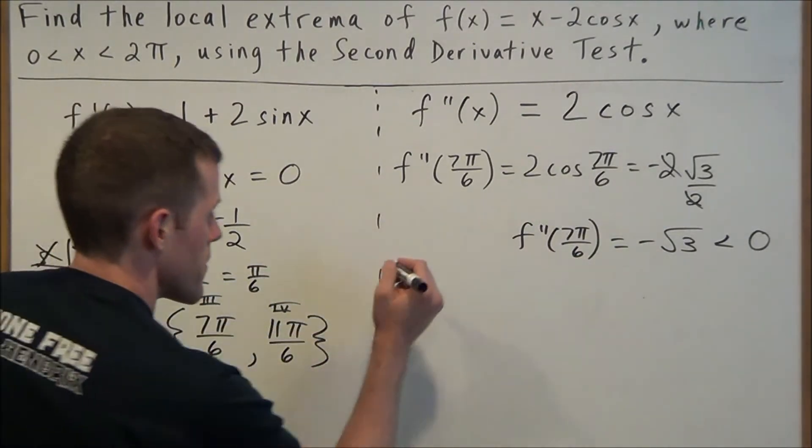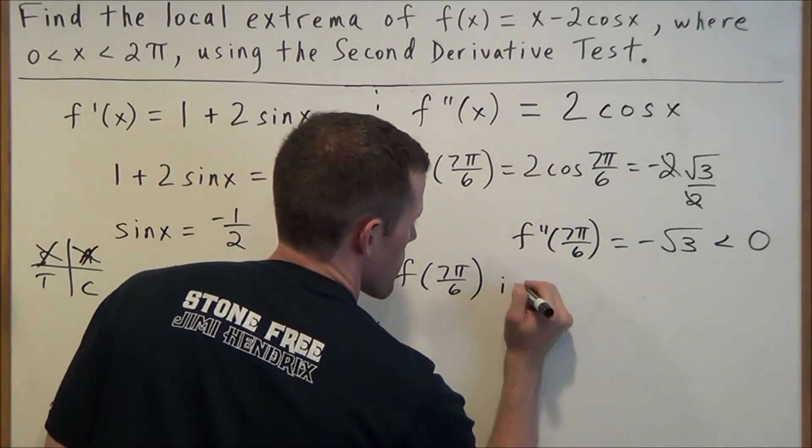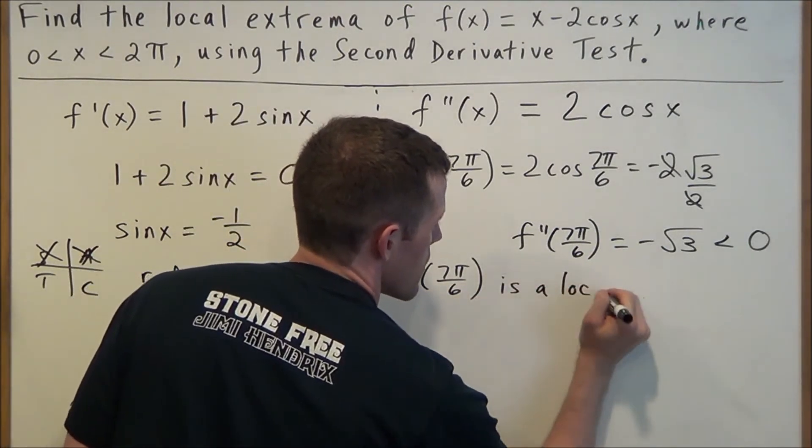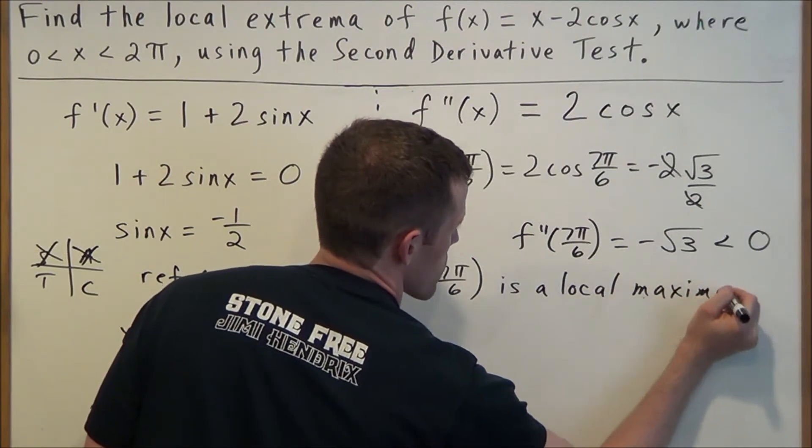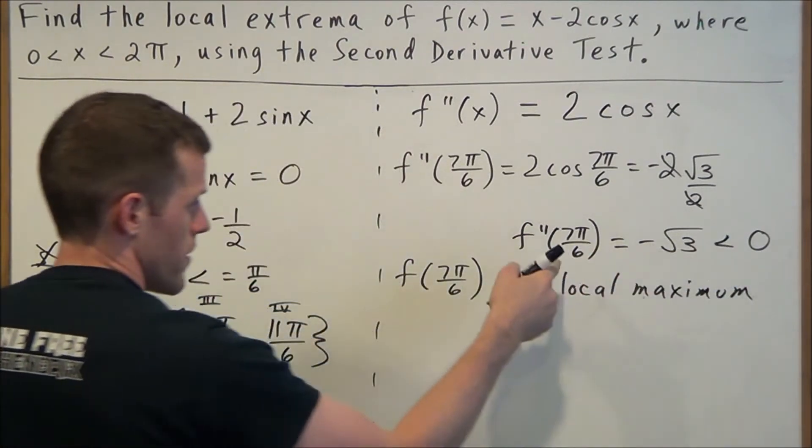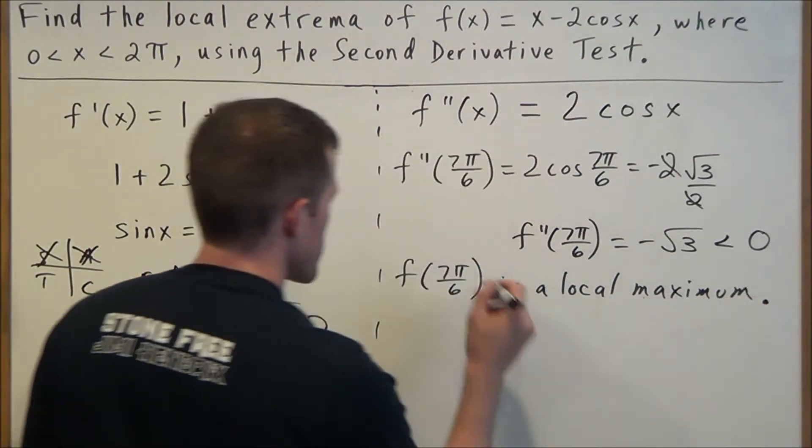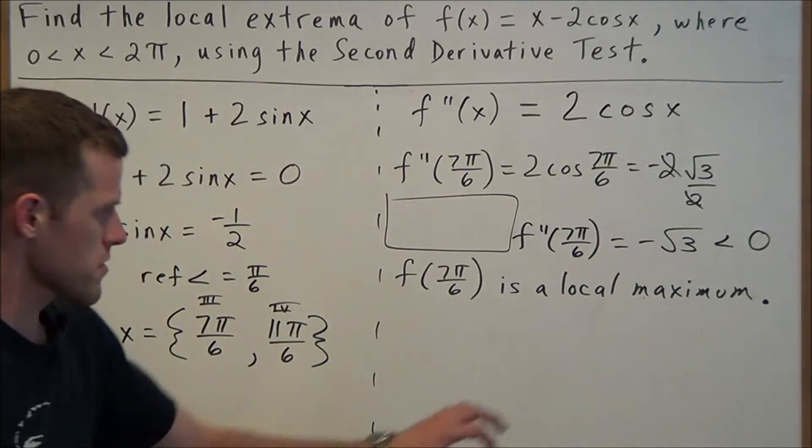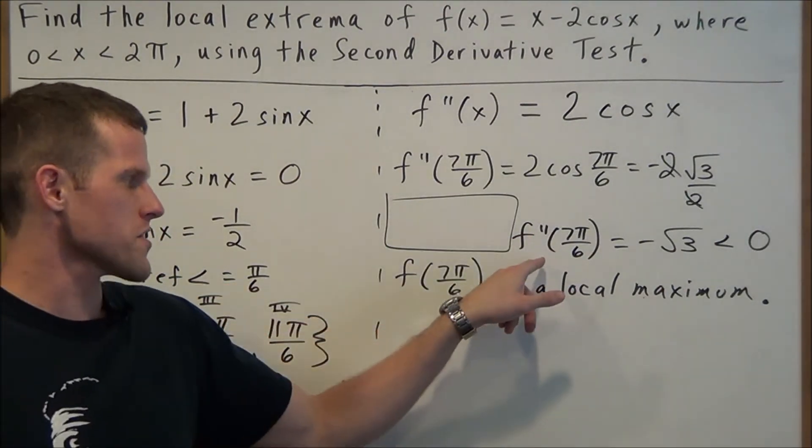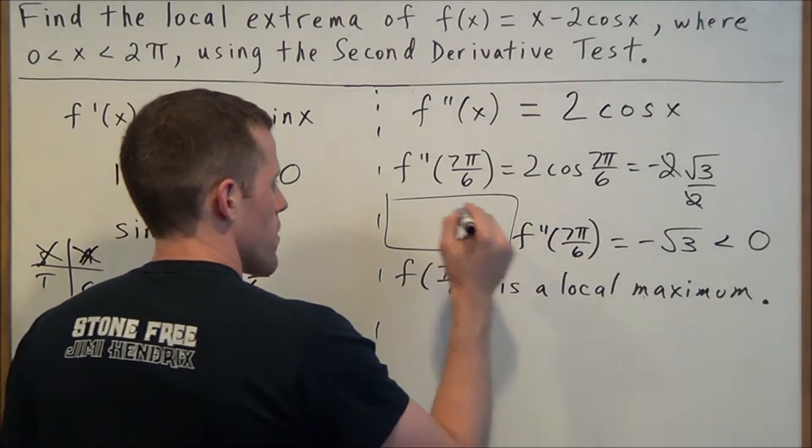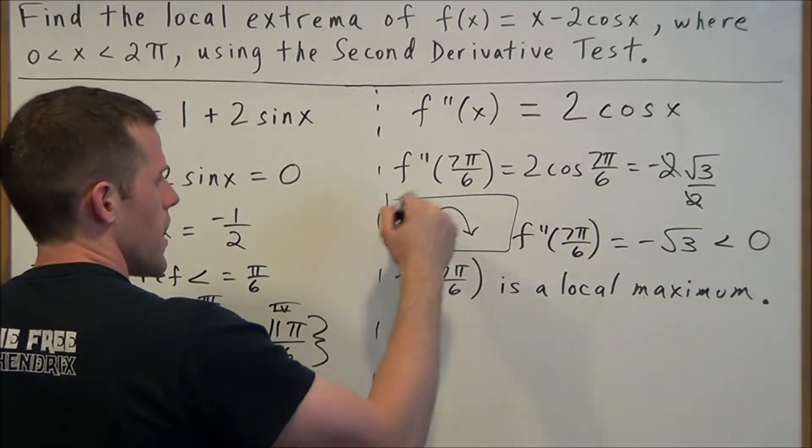But the conclusion of the second derivative test tells us that if our critical value evaluated in our second derivative is negative, then f(7π/6) is a local maximum. And this is based on the result that our second derivative was negative at this particular critical value here. Now this is not mandated, but if you forget this component of the second derivative test, just know if your second derivative is negative, the curve is going to be concave down.